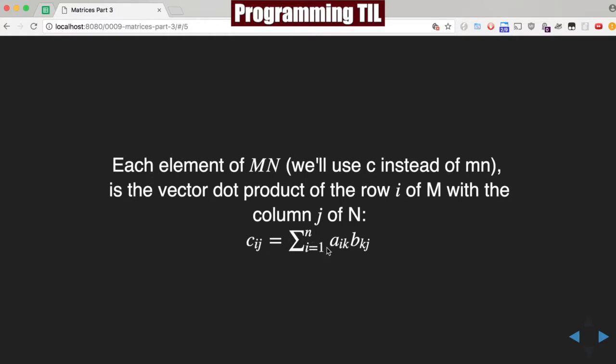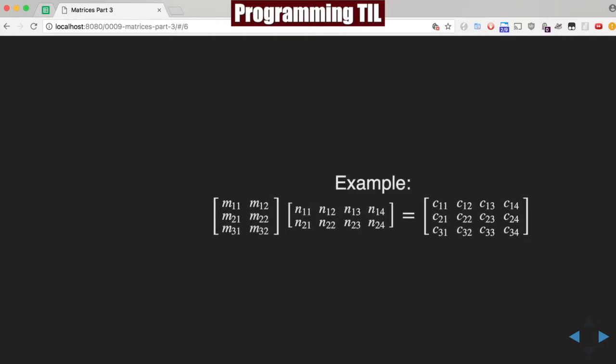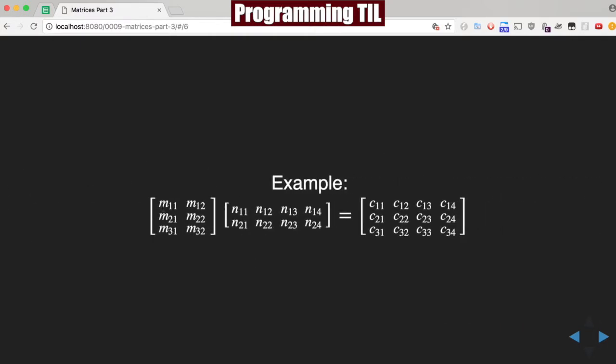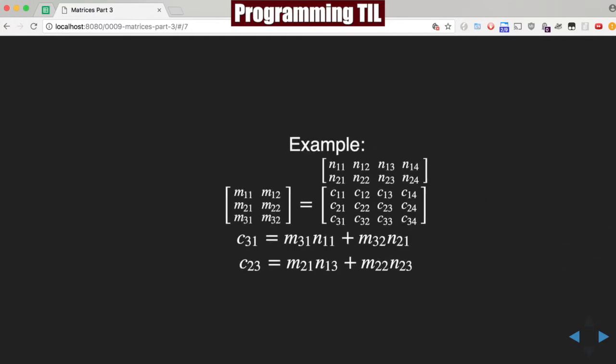It's the summation of M_ik * N_kj, or that would be M and N technically, for every single element within the finished matrix here. So this is kind of that other one again, replacing the MNs with Cs. And what does this look like in practice?